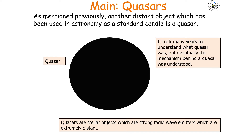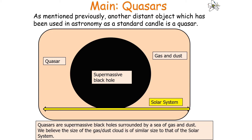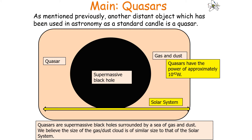It took many years to understand what quasars were, but eventually the mechanism behind a quasar was understood. A quasar is a supermassive black hole surrounded by a sea of gas and dust. We believe the size of the gas and dust cloud is of similar size to that of our solar system. Quasars are the most powerful objects in the universe, with a power of a trillion suns in the space of one solar system — a power output of approximately 10 to the 42 watts.